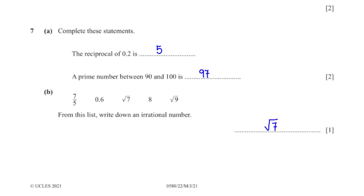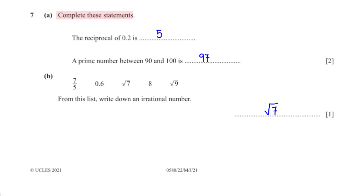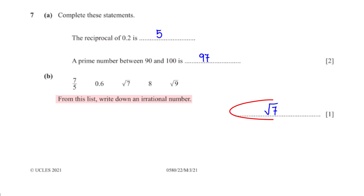The reciprocal of 0.2 is 1 divided by 0.2, which you can type into the calculator to get 5. A prime number between 90 and 100 is 97. From the list, write down an irrational number: an irrational number cannot be expressed as a fraction, and from the list this number is root 7.